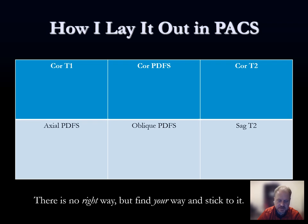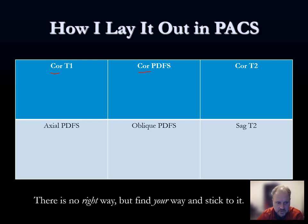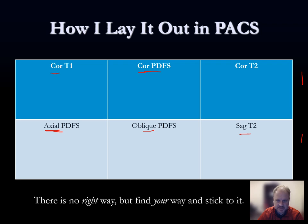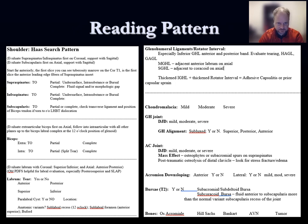This is how I like to lay out the shoulder MRI in PACS. Across the top I'll put my coronal T1, coronal PD fat sat, and coronal T2. Across the bottom on six screens I'll have my axial PD fat sat, oblique PD fat sat, and sagittal T2. That covers everything I need for the current study. If I have comparison exams, I put those on additional screens — at minimum the conventional coronal, axial, and sagittal planes for comparison.